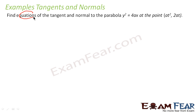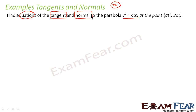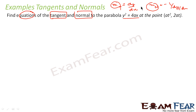Here we have to find the equation of both tangents and normals to this parabola at this point. To find the equation of the tangent, the first thing I have to do is find the slope of the tangent, and the same for finding the equation of the normal — I have to find the slope of the normal. So the first thing I have to find is dy by dx.